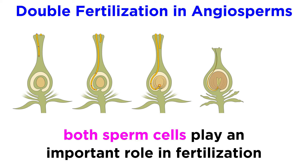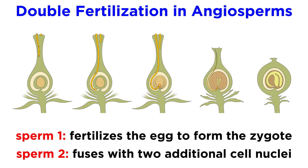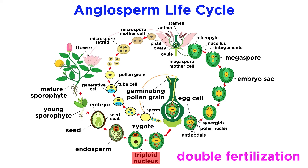Now unlike fertilization in gymnosperms, both of these sperm cells play an important role in angiosperms, and because of this, we refer to the process of fertilization in angiosperms as double fertilization. The way this works is that one sperm cell fertilizes the egg, which generates the diploid zygote that will become the new sporophyte, just as we would expect. But the second sperm cell will fuse with two extra cell nuclei that accompany the egg cell. This triploid structure produces something called the endosperm, which will become part of the resulting seed, providing nutrition for the zygote as it grows into an embryo.